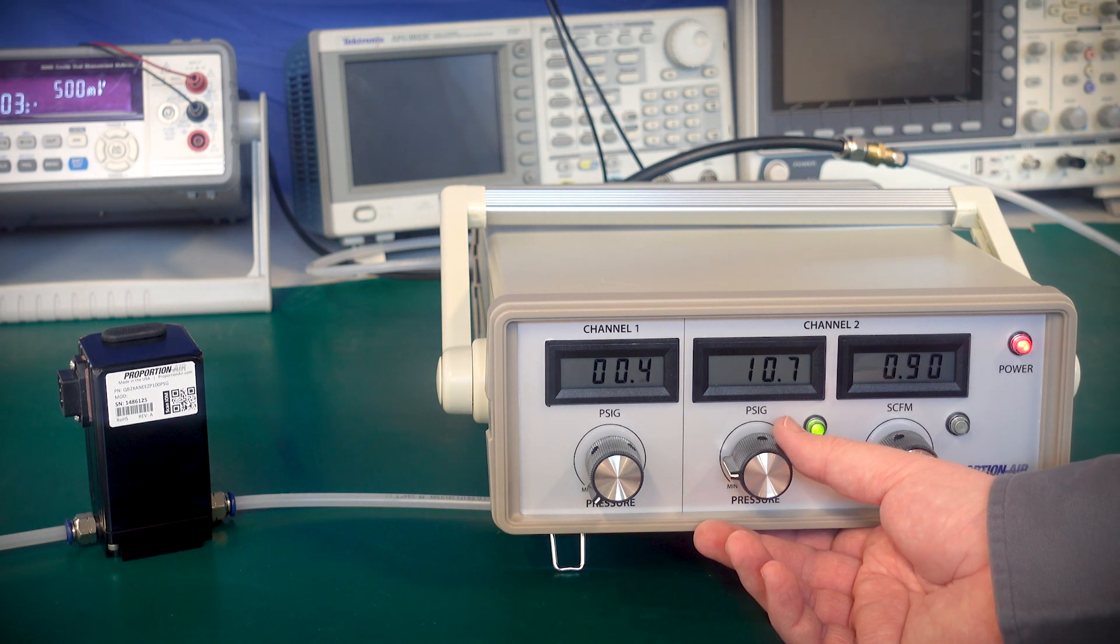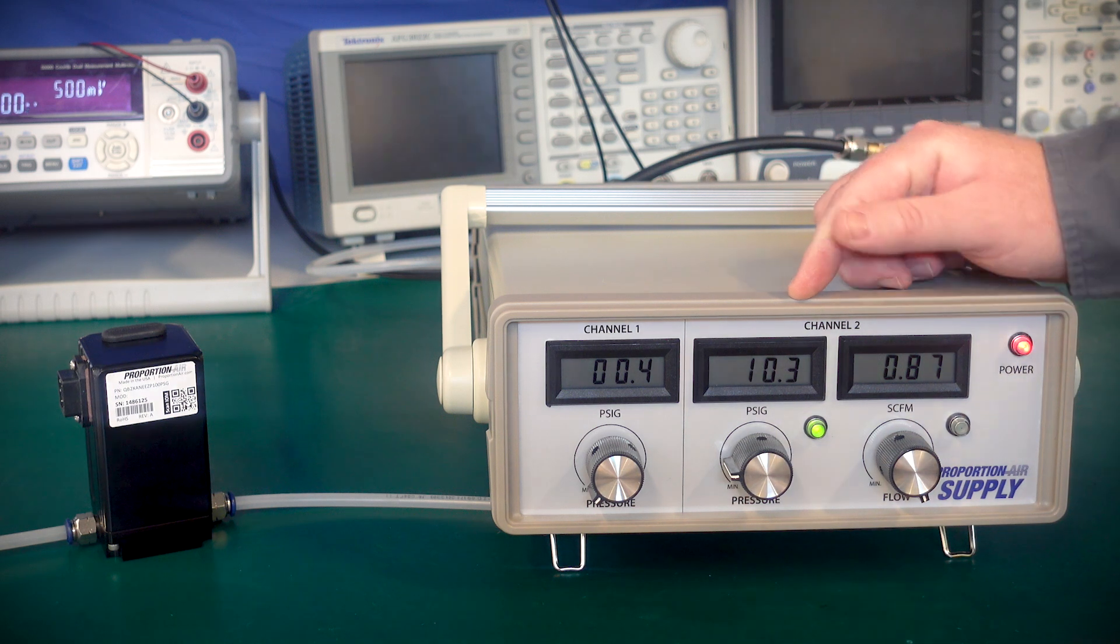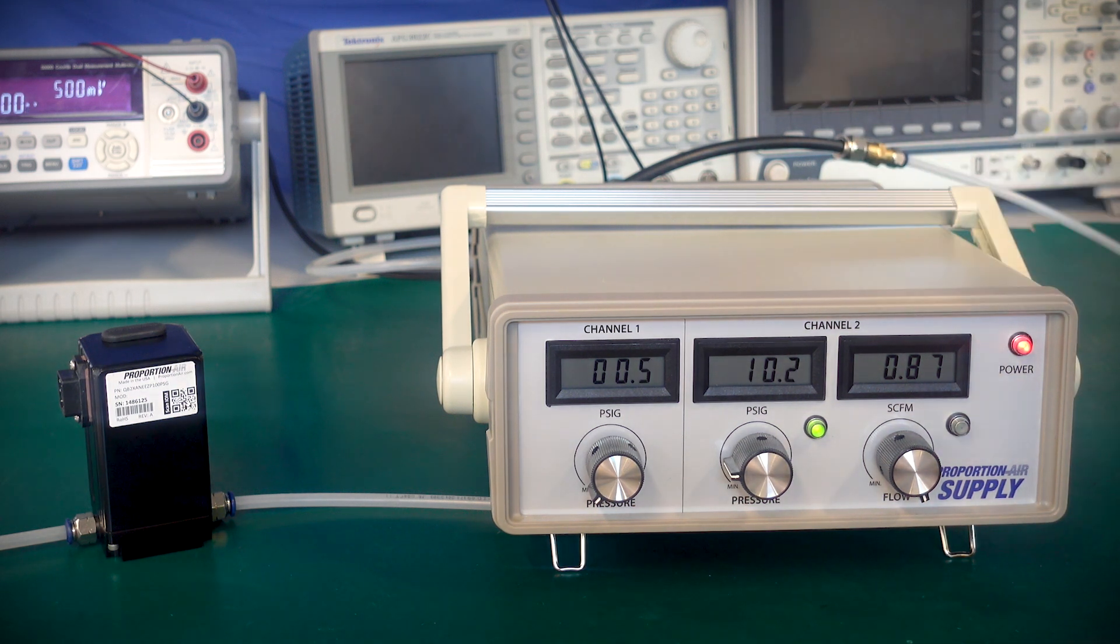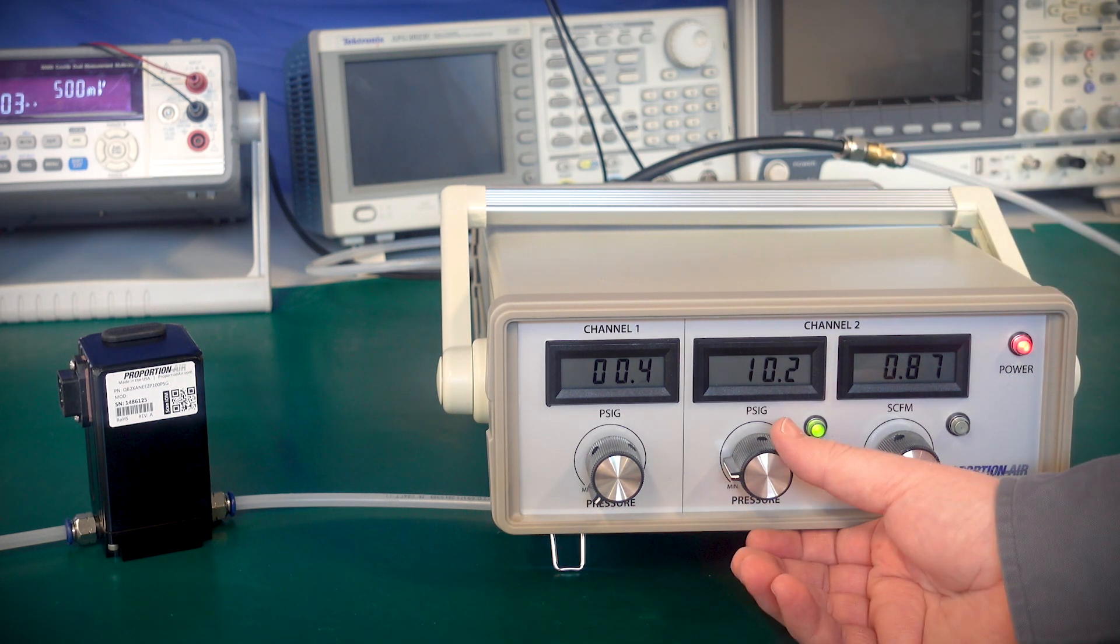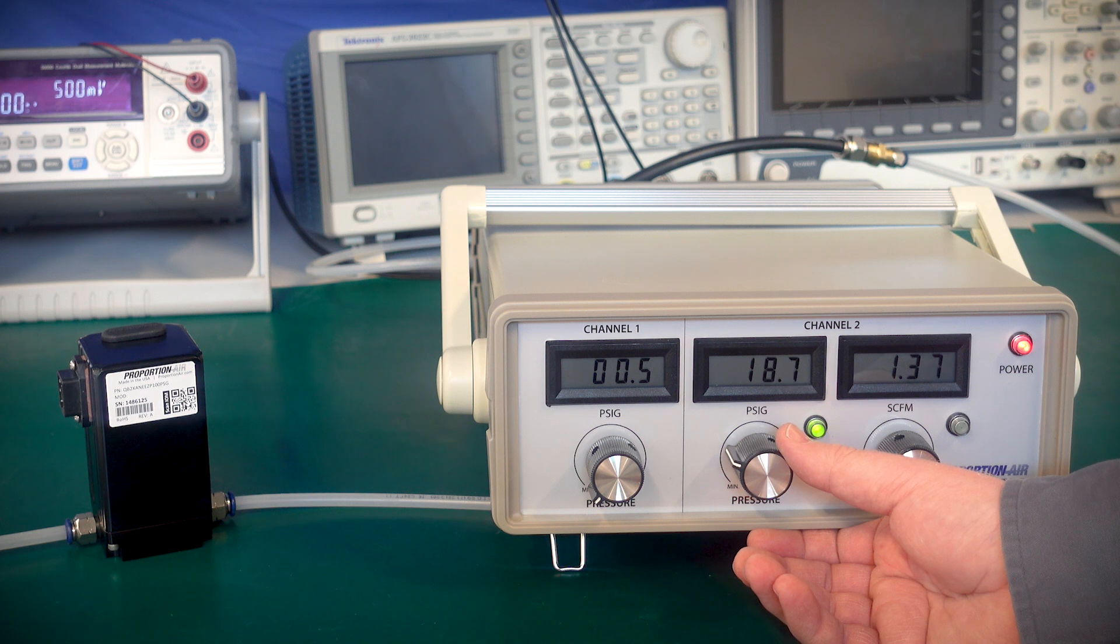To do so, we will turn the flow up to maximum so it is not limiting, and we will adjust the pressure. As we get to a set point, we will read the flow. We will adjust to the next set point and read the flow there. You can put these points on a graph and generate your flow curves.